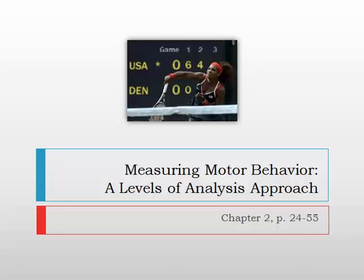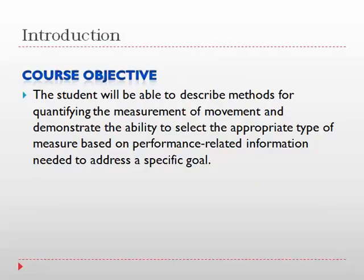This is simply saying that we're trying to understand human performance through more than one dependent variable. We have essentially three types of variables: an independent variable, which is manipulated by the scientist; a dependent variable, which changes due to the manipulation of the independent variable; and a confounding variable, which unintentionally influences the dependent variable. Our course objective is that the student will be able to describe methods for quantifying the measurement of movement and demonstrate the ability to select the appropriate type of measure based on performance-related information needed to address a specific goal.